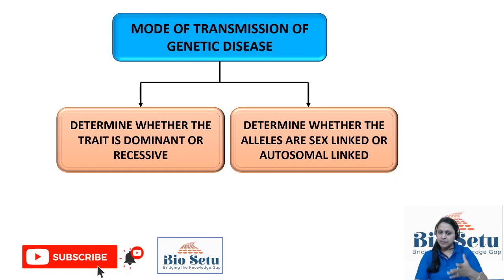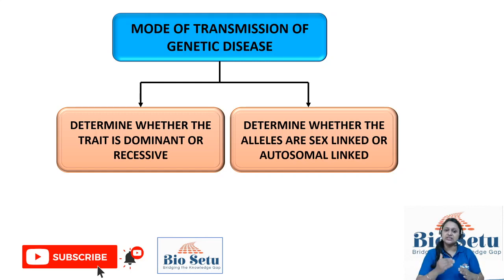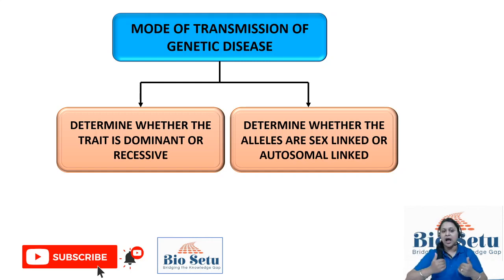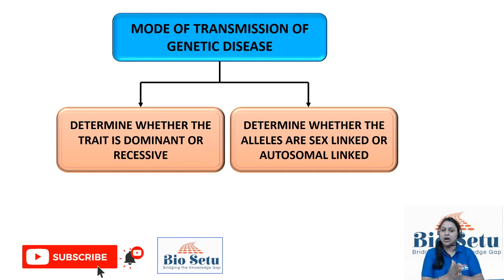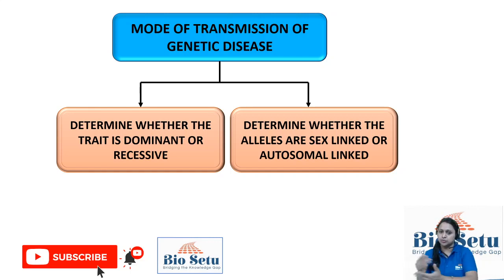So pedigree pattern refers to the path by which a gene or disorder is transmitted — whether it goes to the same generation or to another generation. Based on that path, we have different types of pedigree patterns. How do we know which path is being taken?